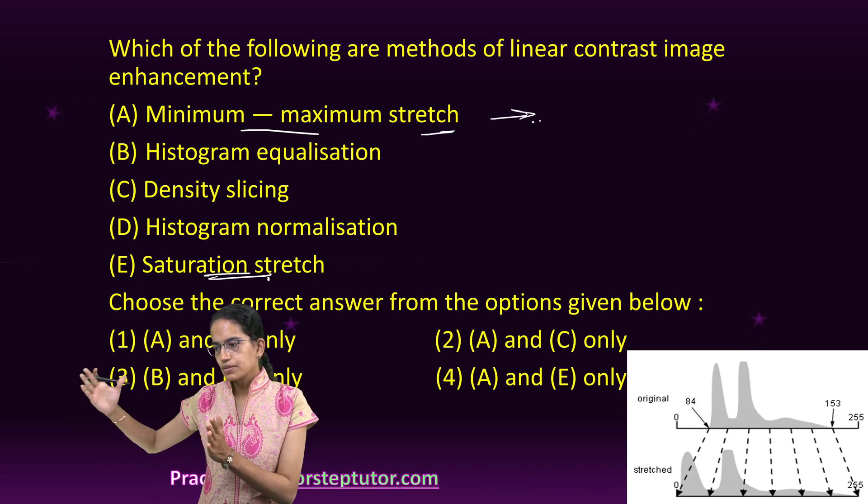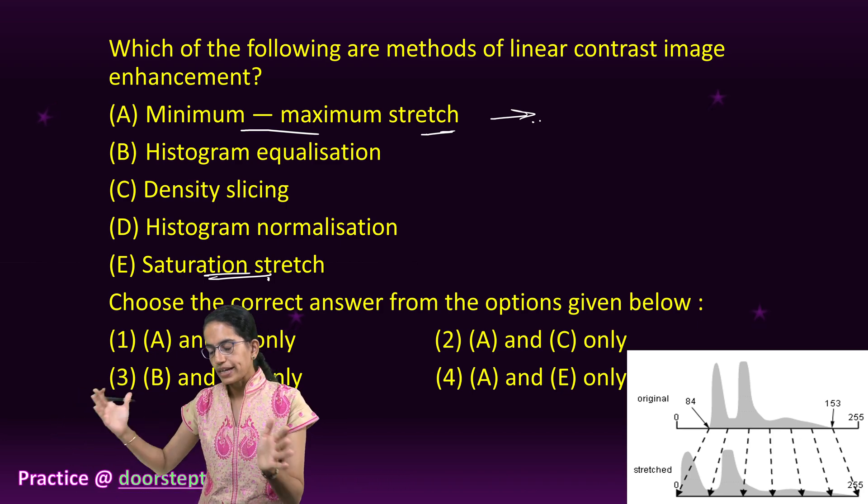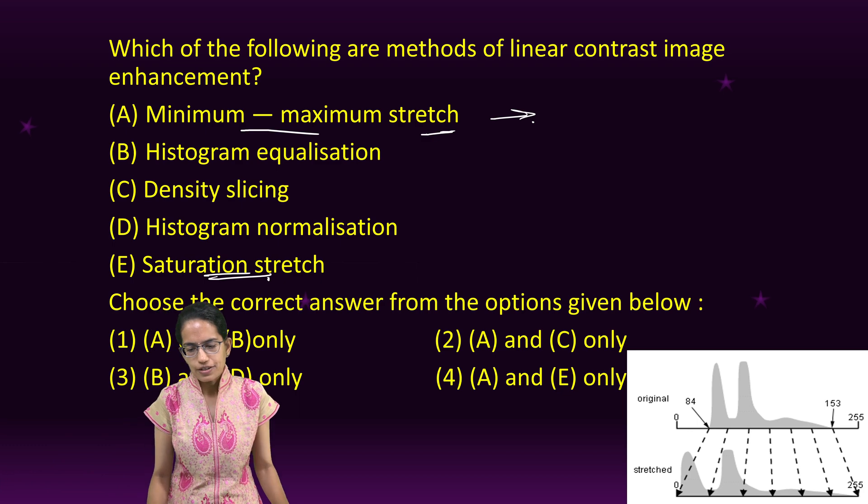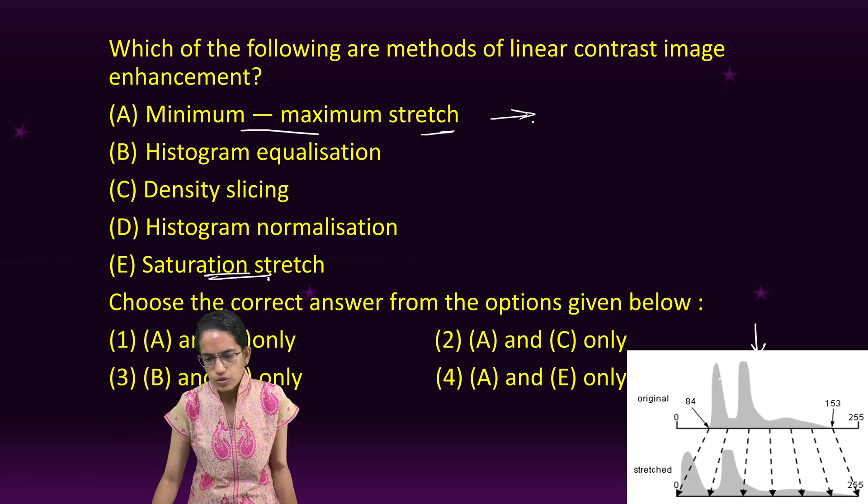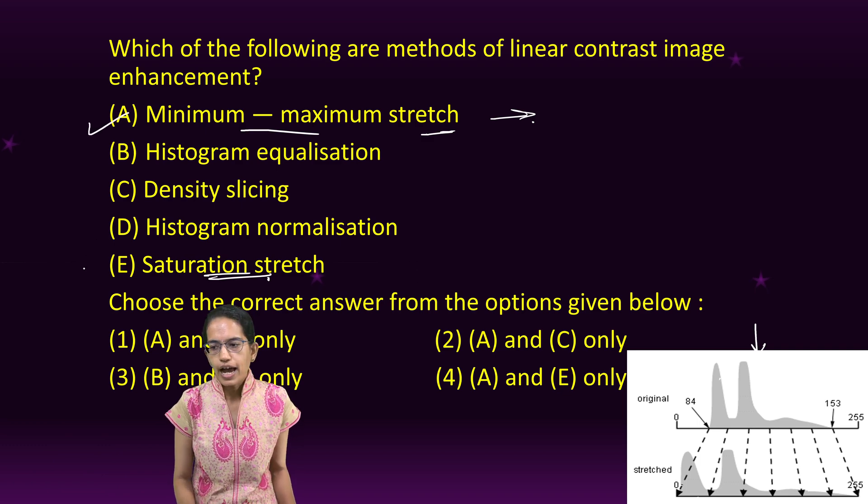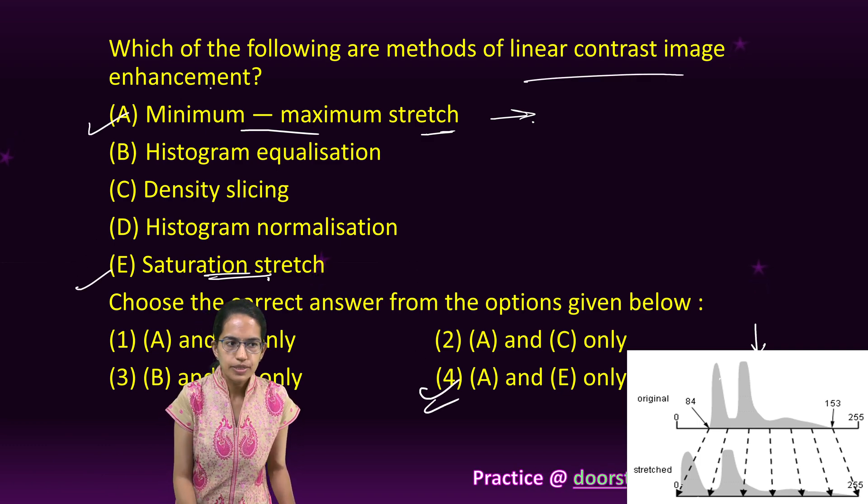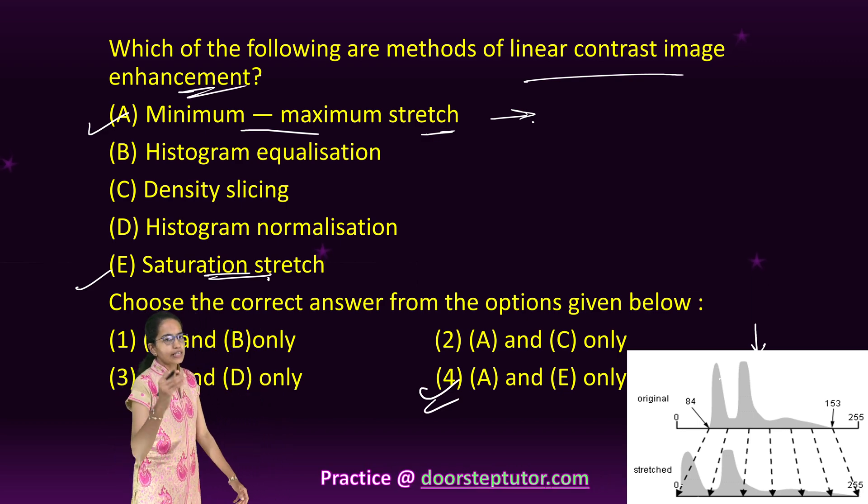Under maximum-minimum stretch, we understand the maximum and minimum values, the brightness of the rasters in terms of maximum and minimum. This is the original graph and this is how the stretch graph would look like. So A and E are the correct options for the linear contrast image enhancement techniques, and this has been covered under the section on remote sensing in the study material.